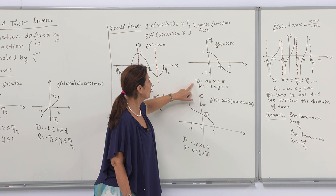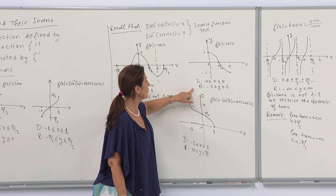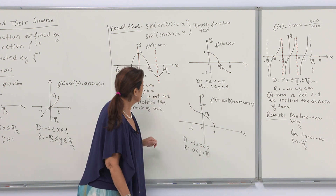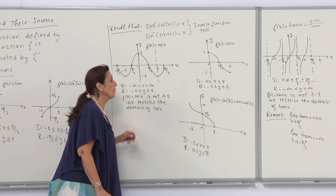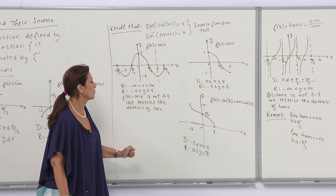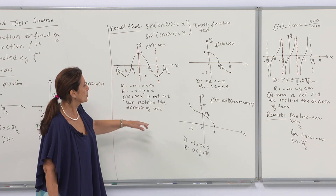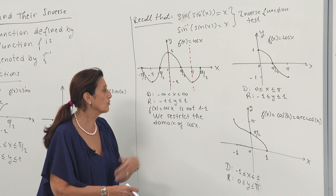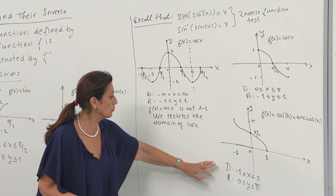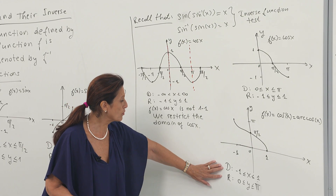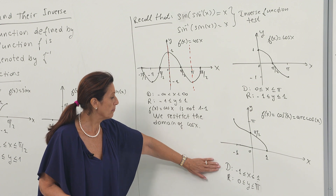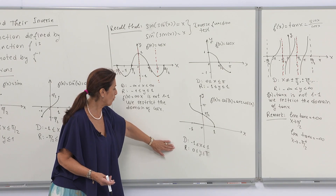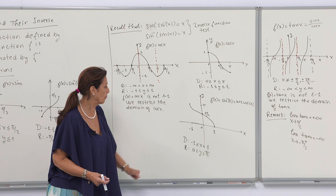Here you have the cosine function with the restricted domain. Our domain is from 0 to π and our range is from minus 1 to 1. The inverse cosine function, or arccosine function, is obtained by reversing x and y, so the domain and range are also reversed. We obtain the domain from minus 1 to 1 and the range from 0 to π.